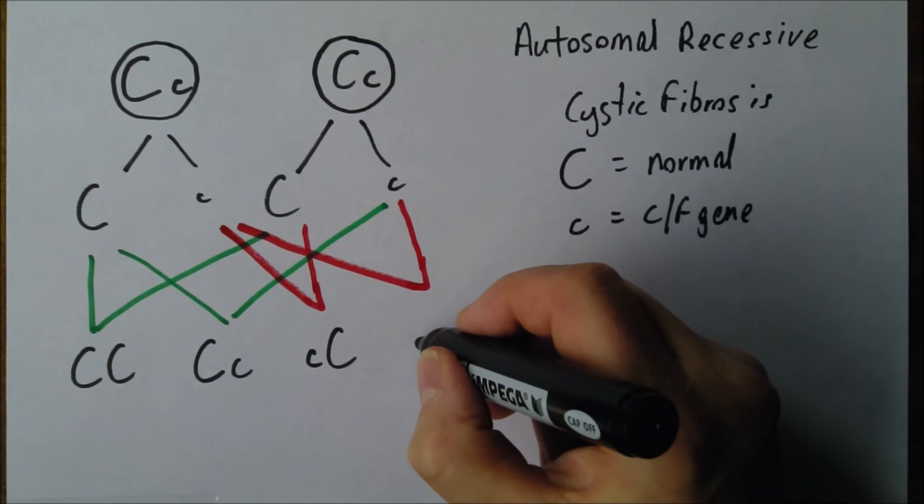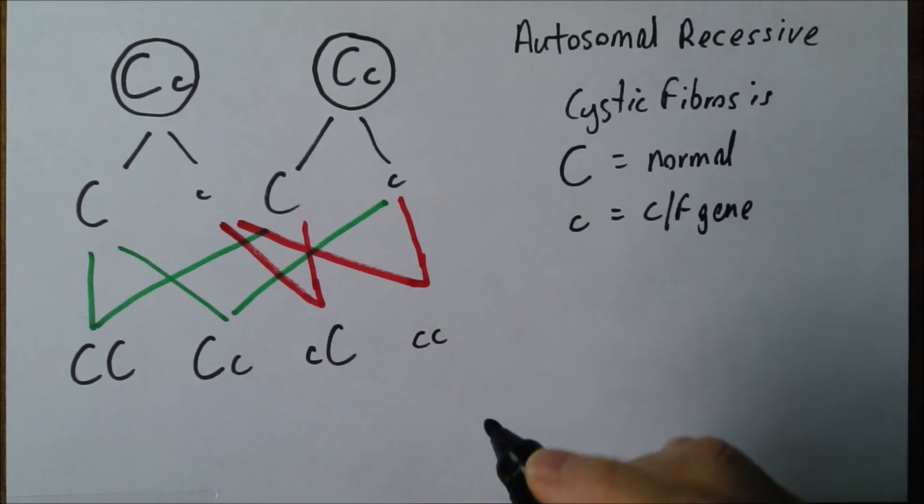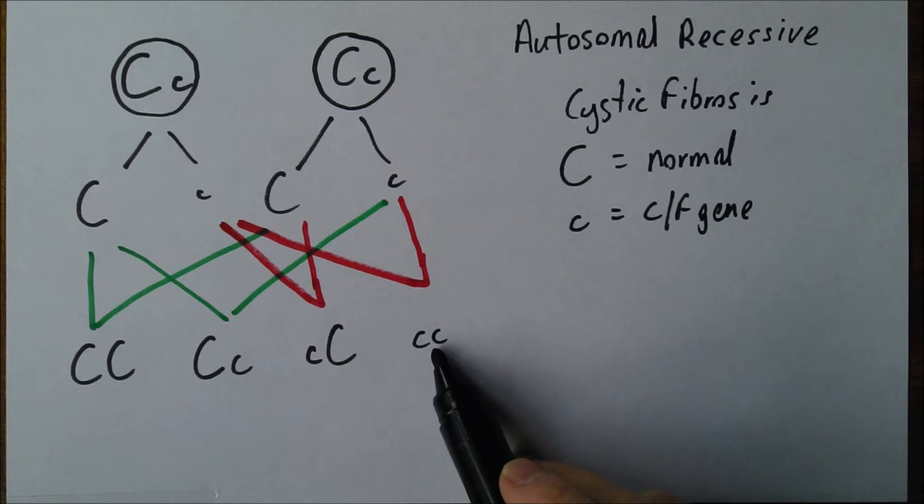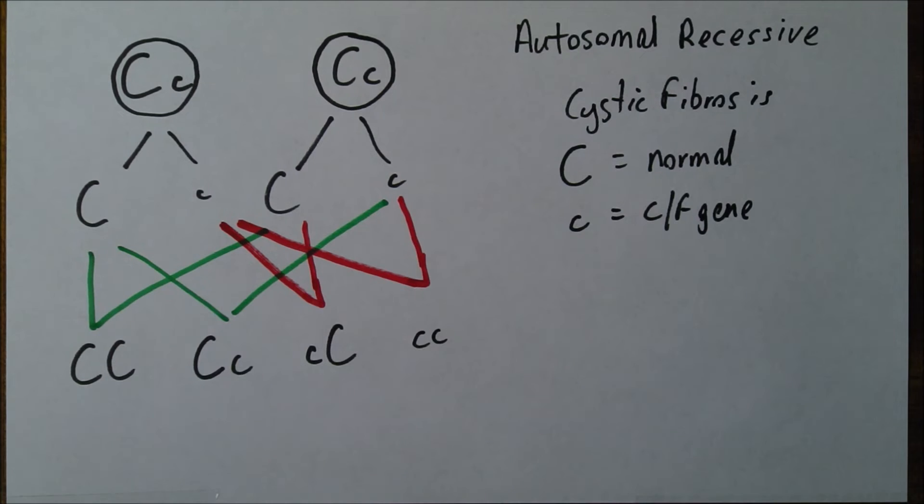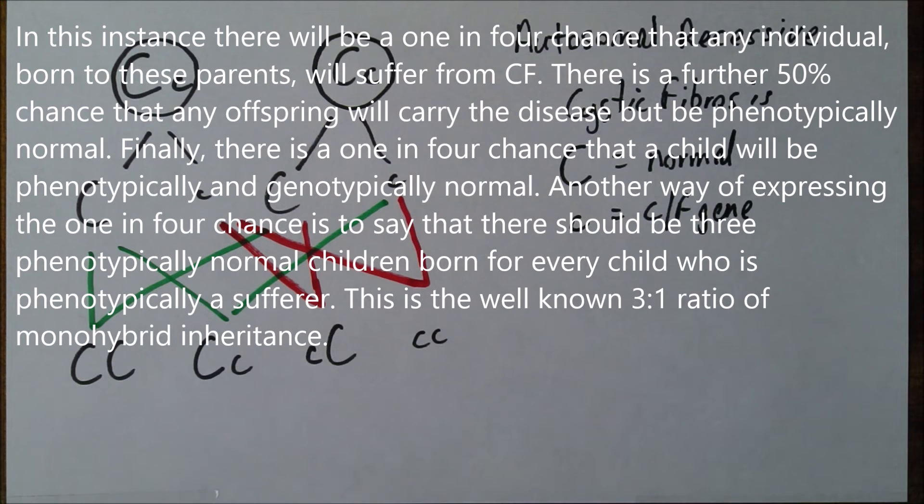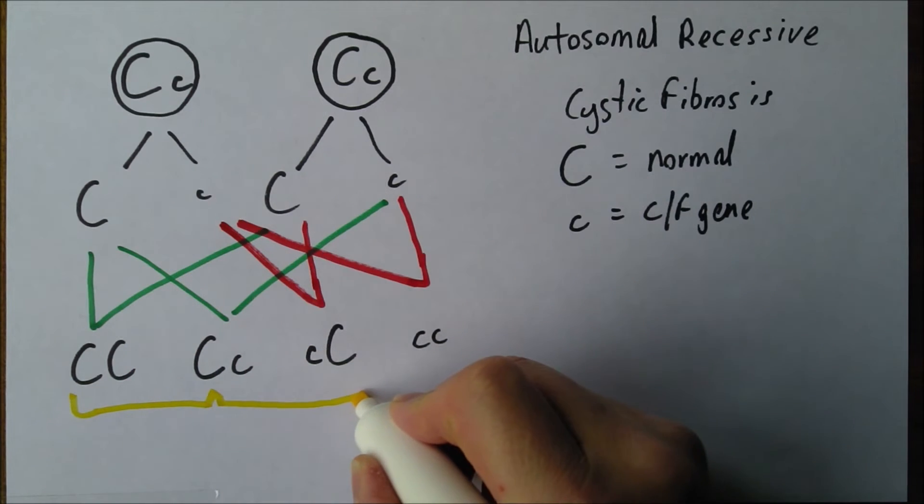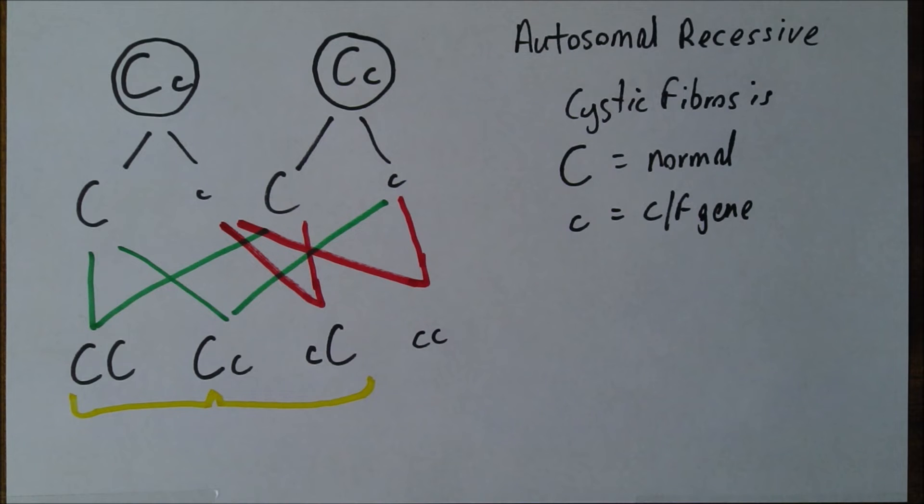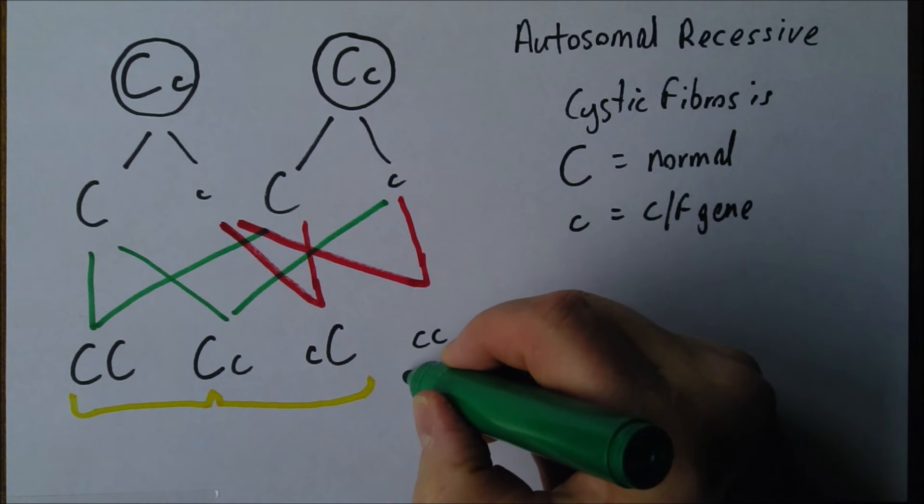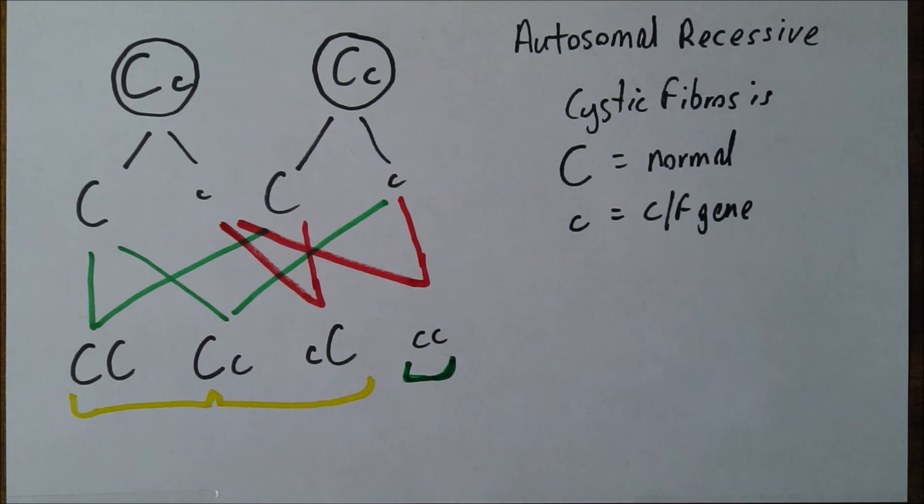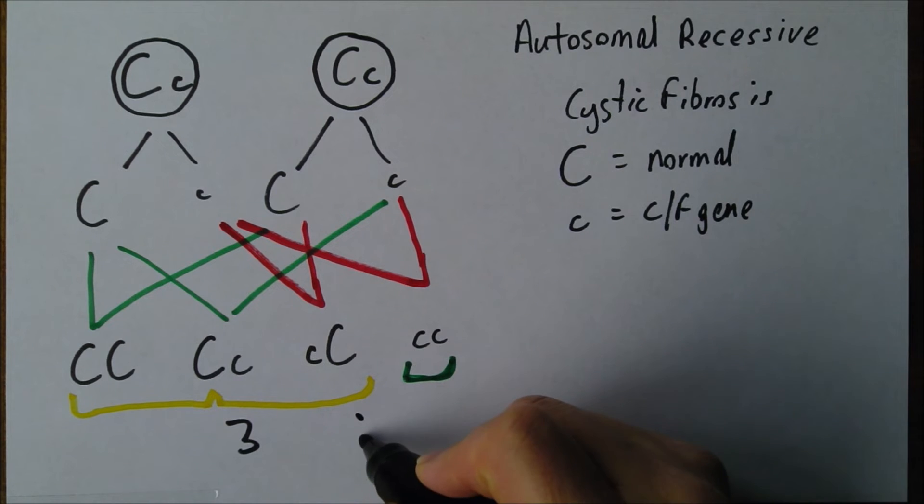But here we have two small cs. This person has two copies of the recessive cystic fibrosis gene. There's no normal dominant gene present, so they will suffer from cystic fibrosis. This is the classic monohybrid 3:1 ratio.